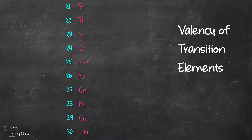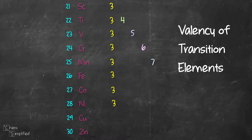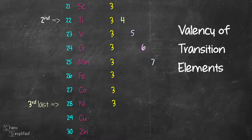Starting with element 21, scandium, the valency is 3. And then we go 4, 5, 6, and then 7 for manganese. Each of these elements will have a valency of 3 up until the third last element which is nickel. And then starting from the second element, which is element 22 titanium, all of them will have a valency of 2.